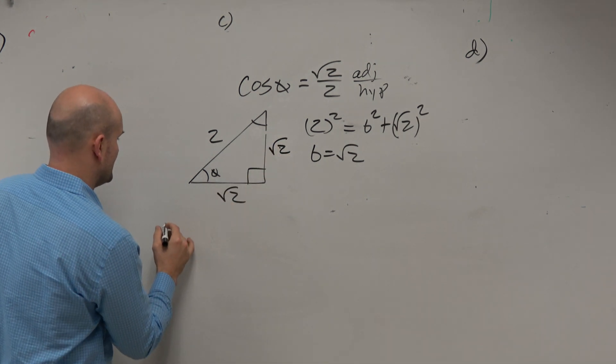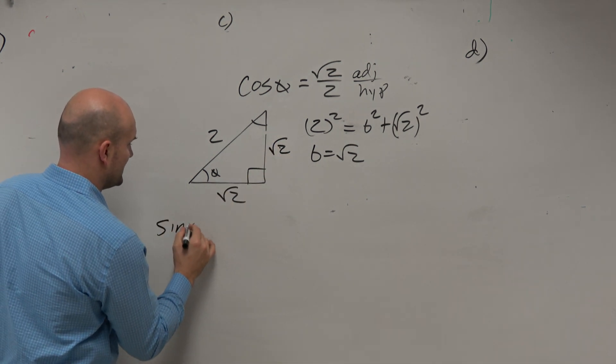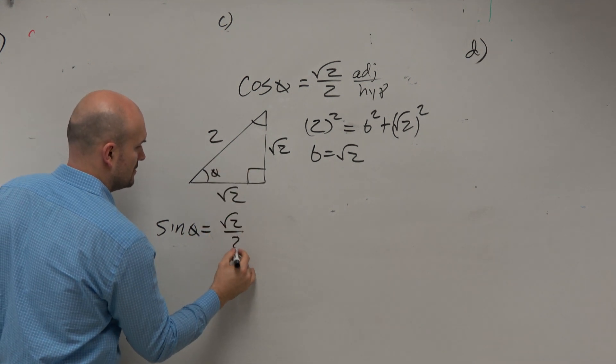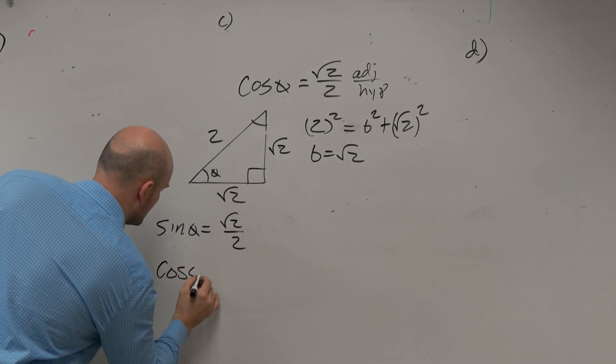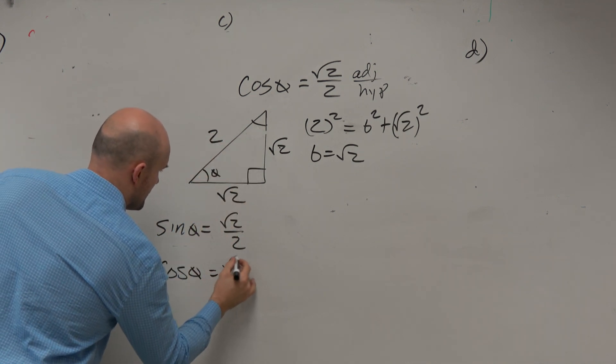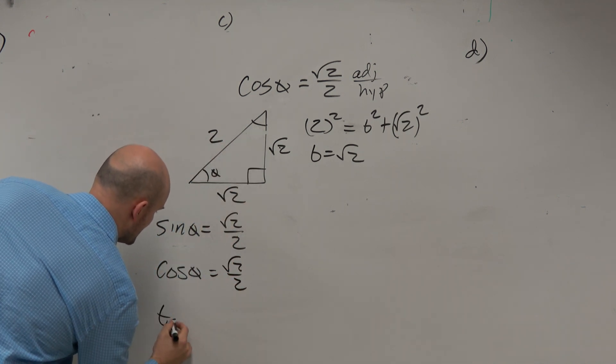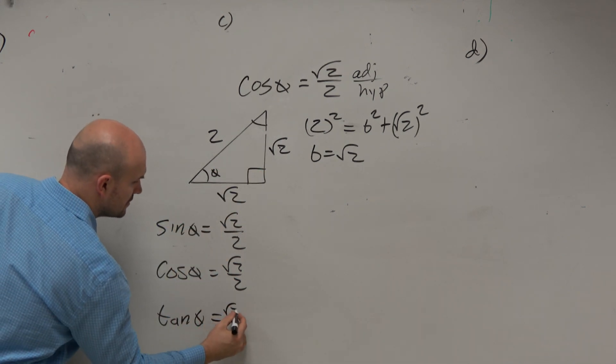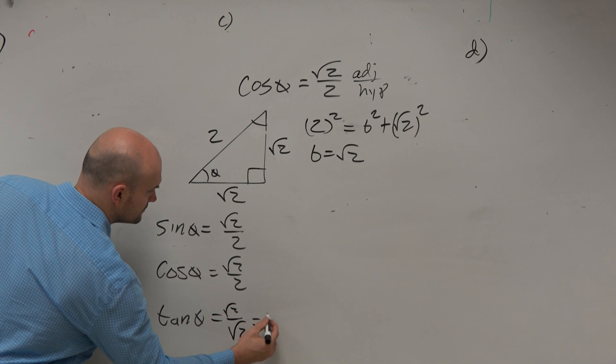Right? OK. So let's see. We can do sine of theta, opposite over hypotenuse. Cosine of theta, adjacent over hypotenuse. Tangent of theta, square root of 2 over square root of 2, 1.